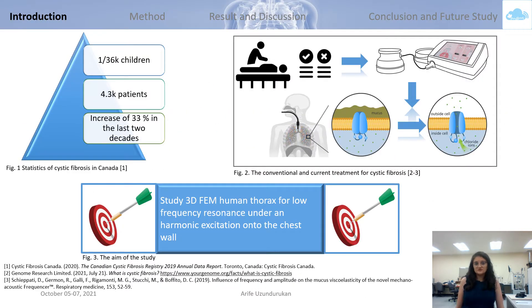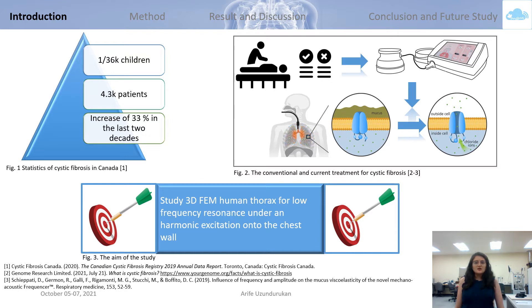Let's start with introducing cystic fibrosis. It's a relatively common inherited disease, seen in 1 over 36,000 children, and now 4.3 thousand patients suffer from it, which represents an increase of 33% in the last two decades in Canada. As shown in Figure 2, as a conventional therapy to liquefy the sticky mucus in the airways and overwhelm one of the devastating effects of the disease, clamping is used by physiotherapists, and many devices have been developed to do it. However, no studies have been conducted so far to examine the human thorax numerically, which renders it possible to go further in the area.